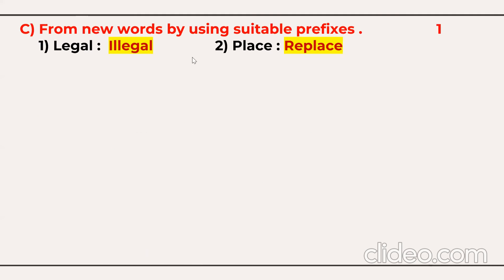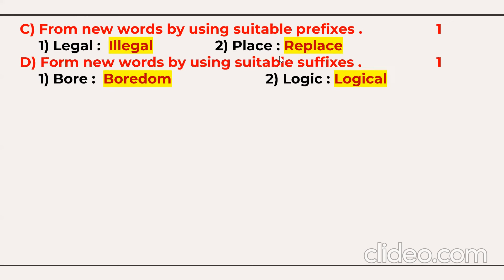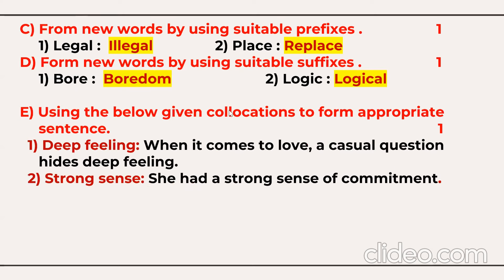Next, you need to add a prefix. For example, for 'legal' the answer is 'illegal'; for 'place' the answer is 'replace' — that's one mark. Then you need to add a suffix. For 'bore' the suffix is 'dom', giving 'boredom'; for 'logic' the suffix is 'al', giving 'logical'. That covers prefix and suffix questions.